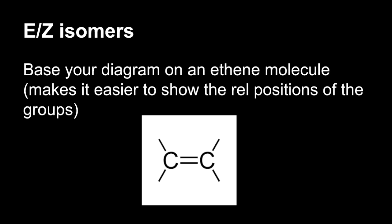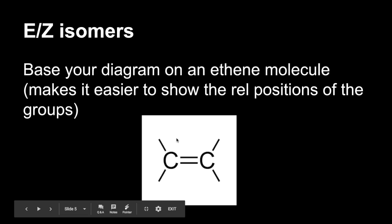E/Z isomers, my tip is to base your diagram on an ethene molecule. So if you can construct a diagram like that. So carbon-carbon double bond, and then just put your four groups on, and then decide which are the priority groups, and therefore which is the E and which is the Z.